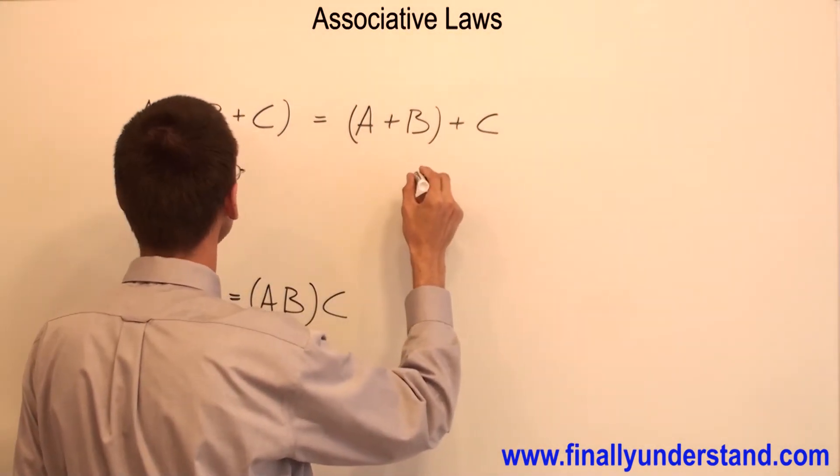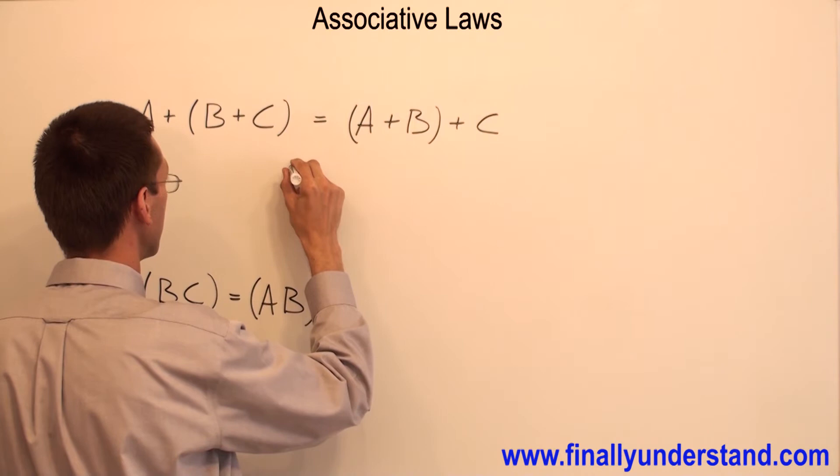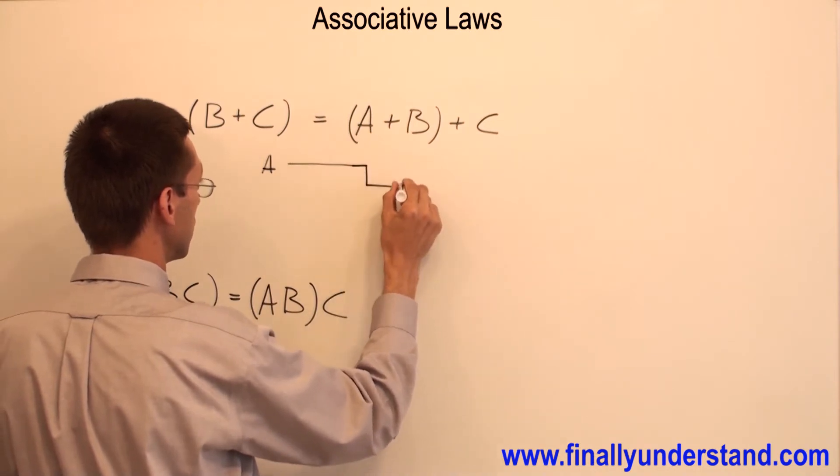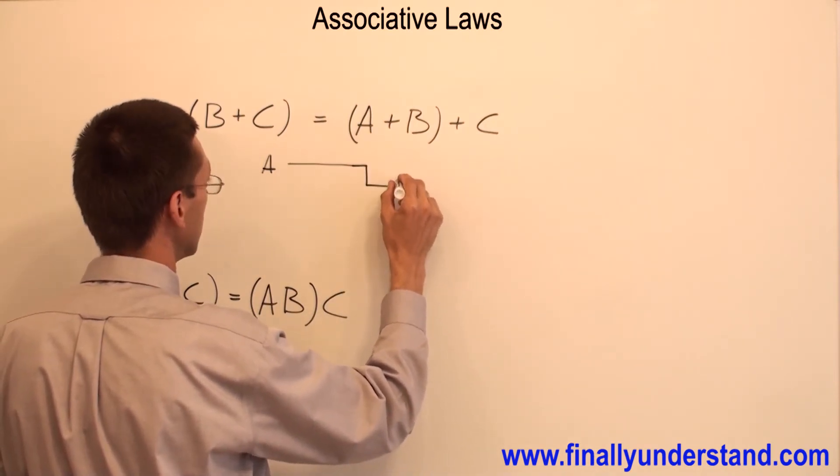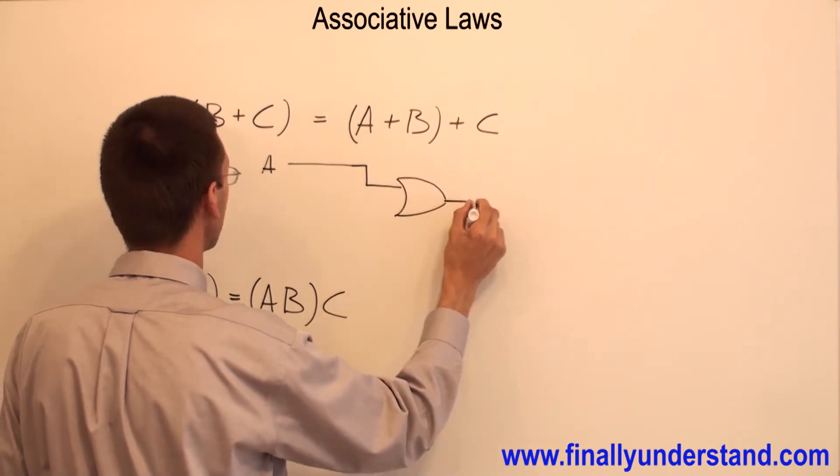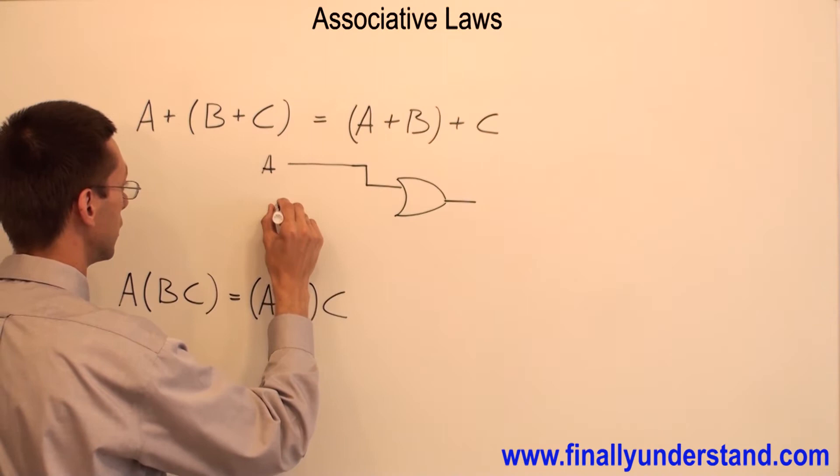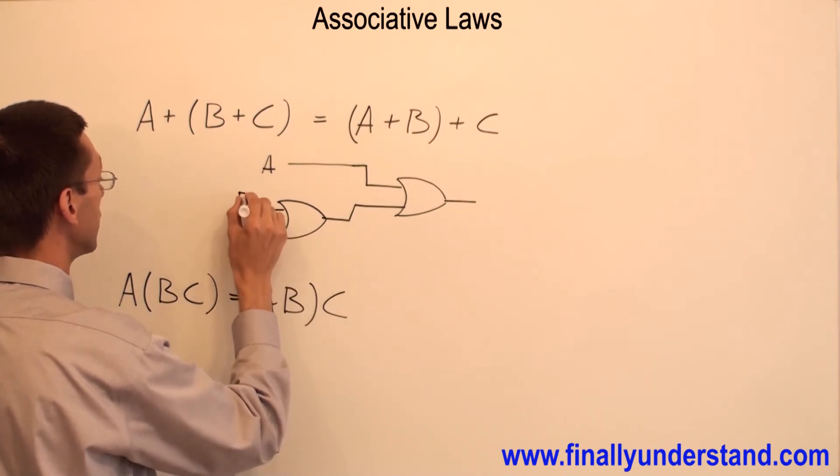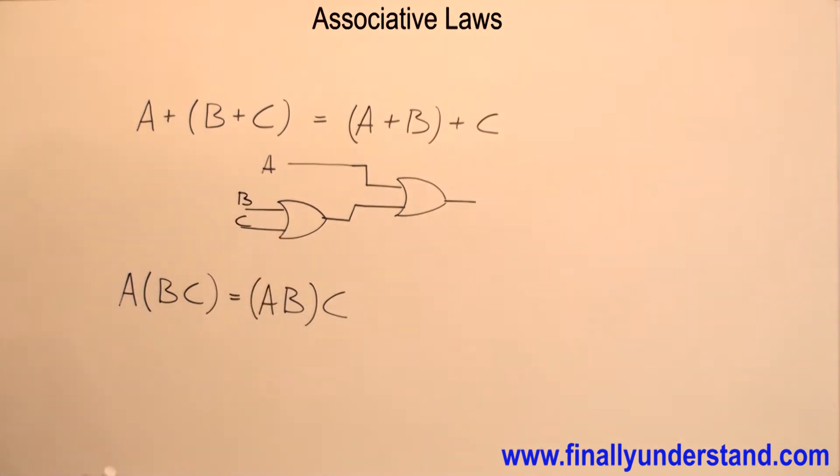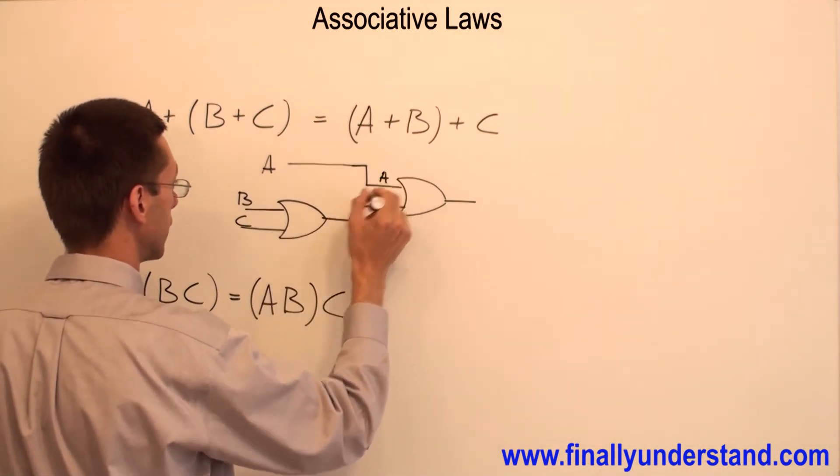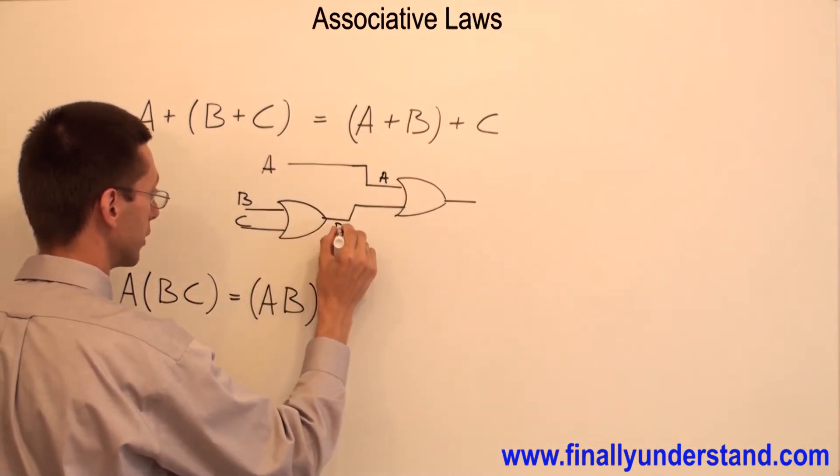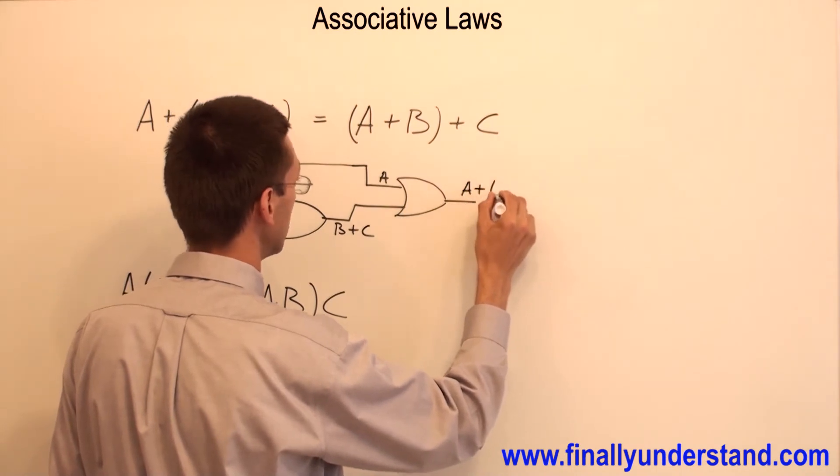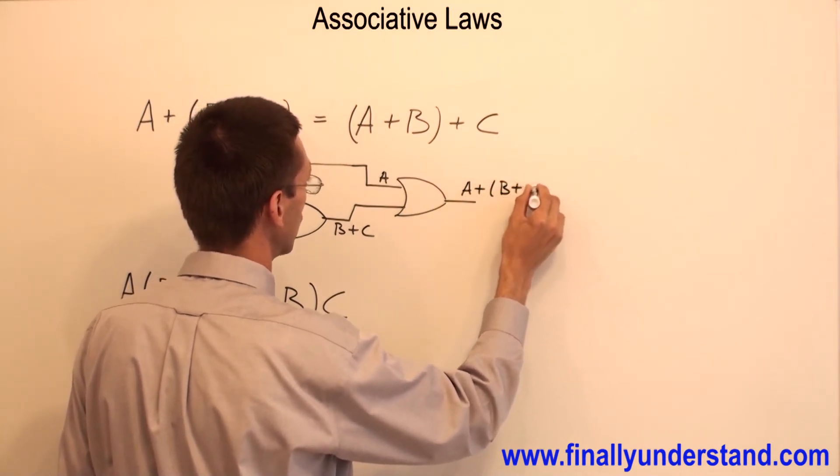Let's see how it's going to look like on the diagram. So I have A and I'm going to have OR with B, C. So I'm going to have A over here. B OR C will give me B OR C over here. And my answer is going to be A OR B OR C.